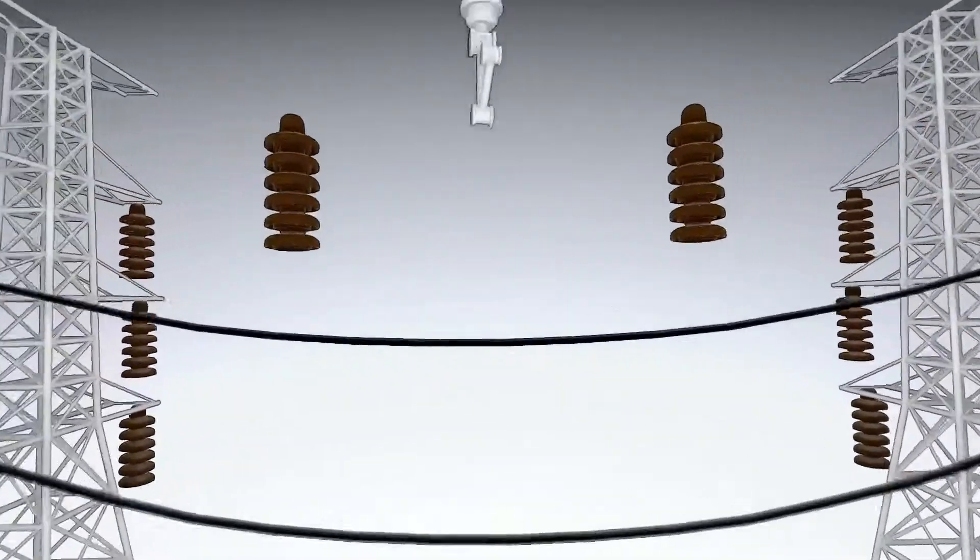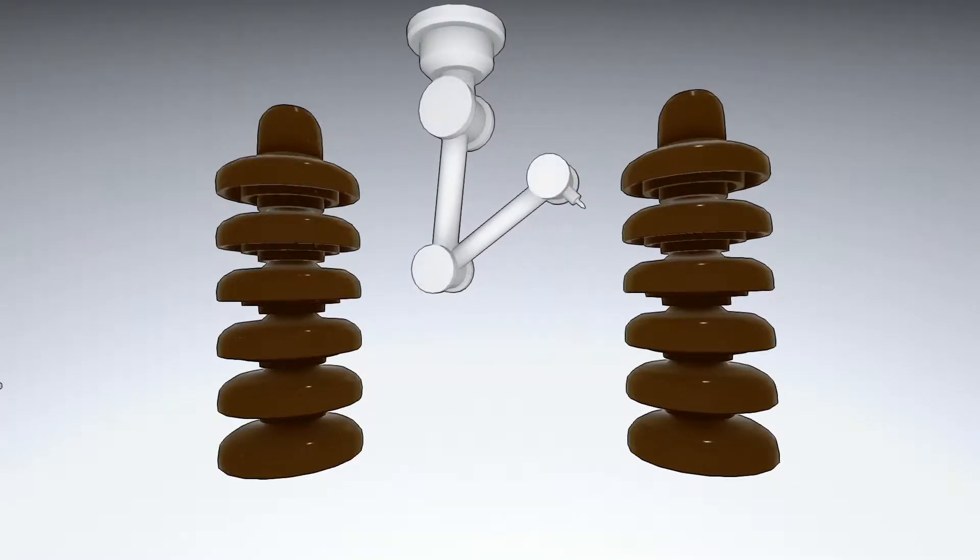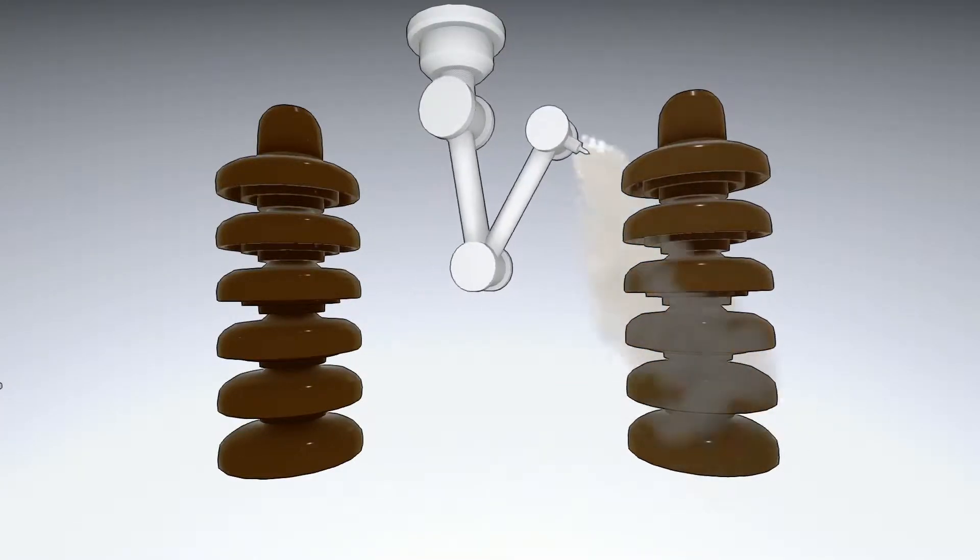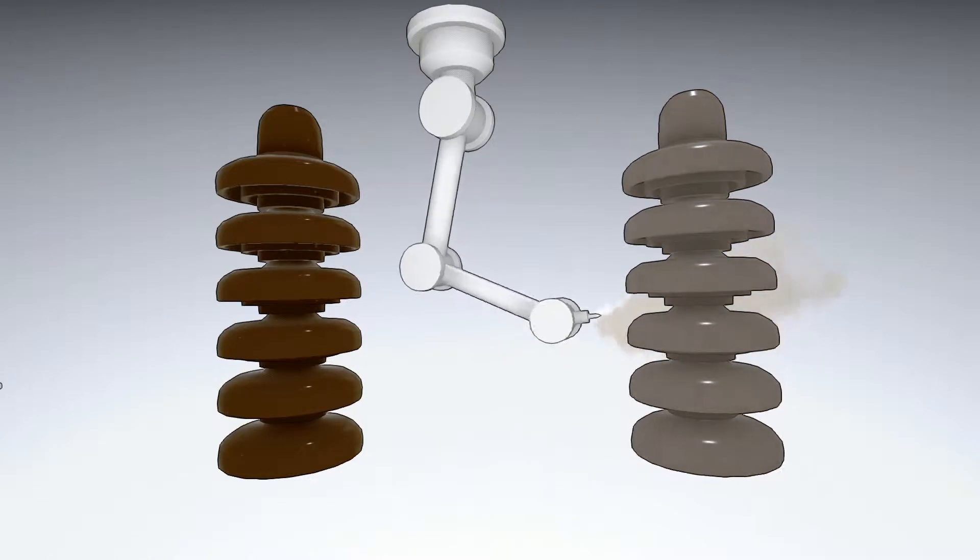Comparing a SiCoat protected insulator against an unprotected insulator, the surface of each insulator becomes equally contaminated due to pollution.